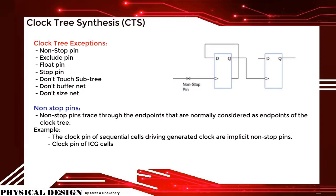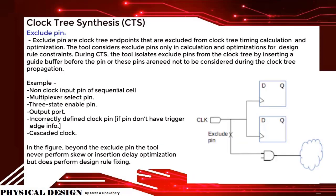Non-stop pins trace through the endpoints that are normally considered as endpoints of the clock tree. For example, the clock pin of sequential cells driving a generated clock are implicit non-stop pins, as are clock pins of ICG cells. Exclude pins are clock tree endpoints that are excluded from clock tree timing calculation and optimization. The tool considers exclude pins only for design rule constraints. During CTS, the tool isolates exclude pins from the clock tree by inserting a guide buffer before the pin. Examples include non-clocked input pins of sequential cells, multiplexer select pins, three-state enable pins, output ports, incorrectly defined clock pins, and cascaded clocks.